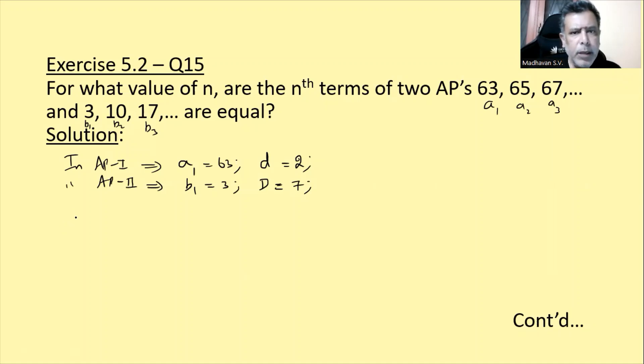Tho ab kya bol rahe hai? Matlab dono nth term equal hai na. Matlab An is equal to Bn. Usko am lik sakte hain. A1 plus n minus 1 times d1 is equal to B1 plus n minus 1 times D2.